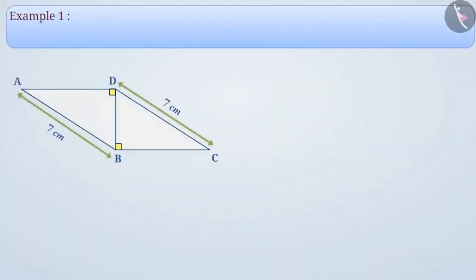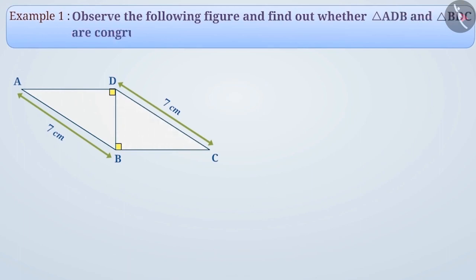Example 1: Observe the following figure and find out whether triangle ADB and triangle BDC are congruent. If it is, write their congruence relation.